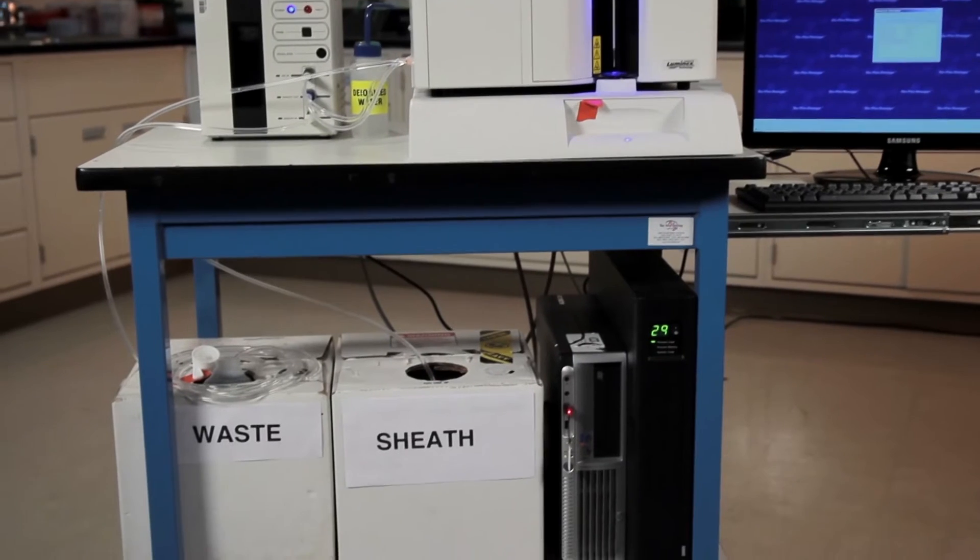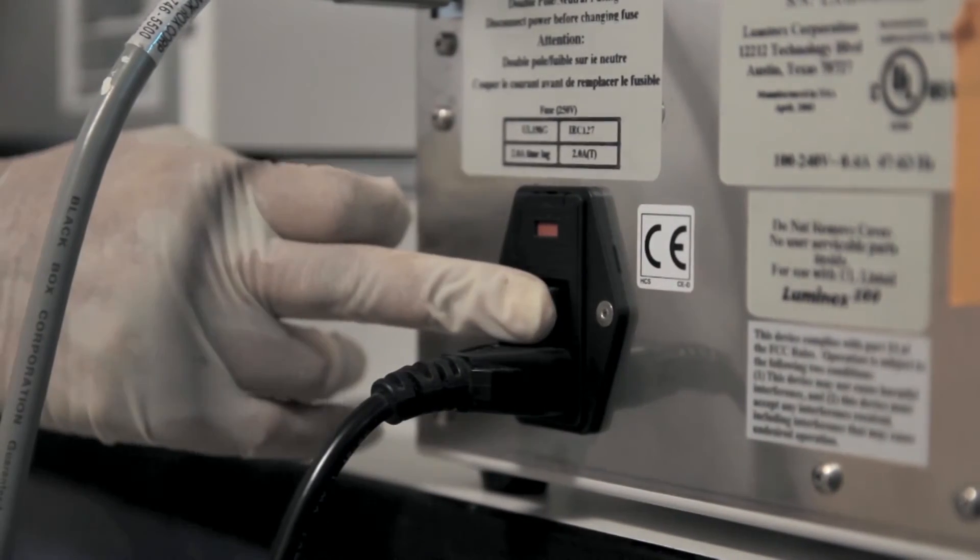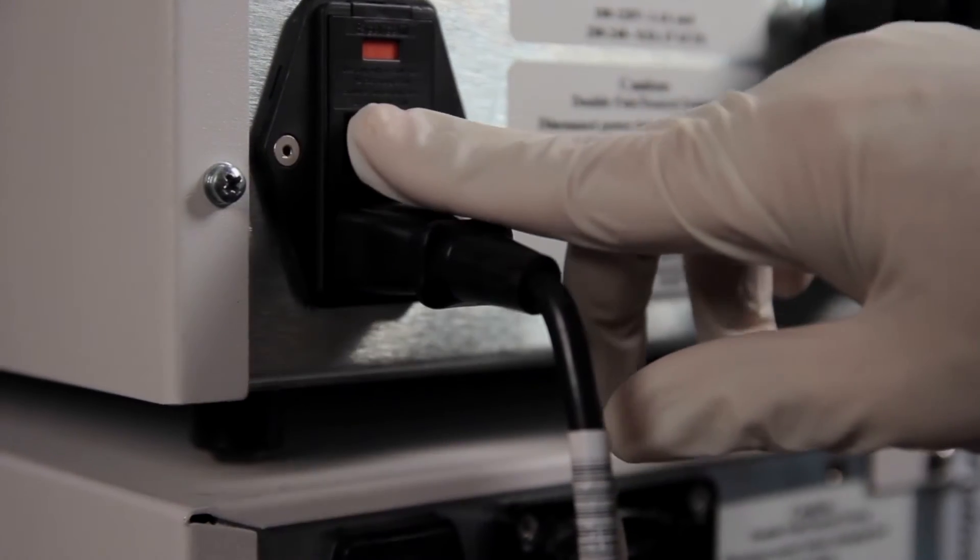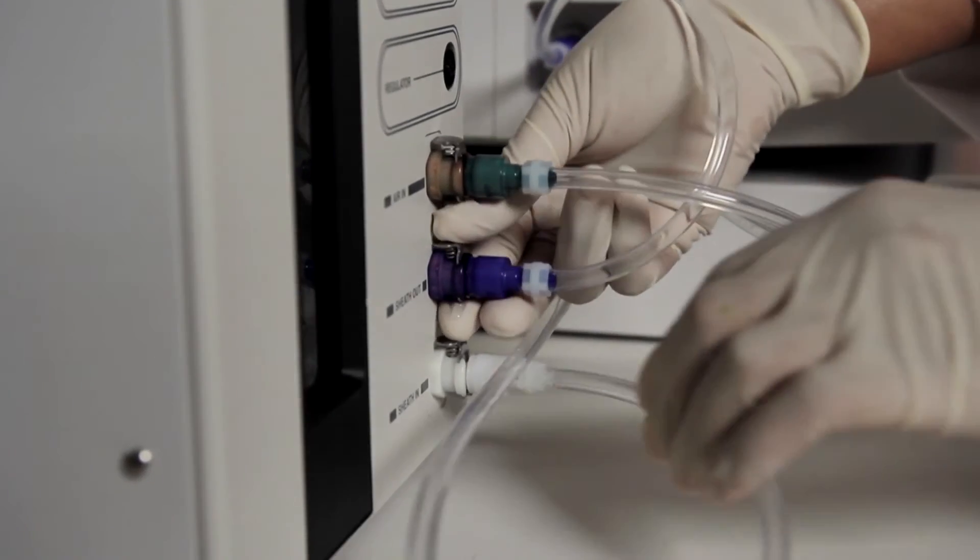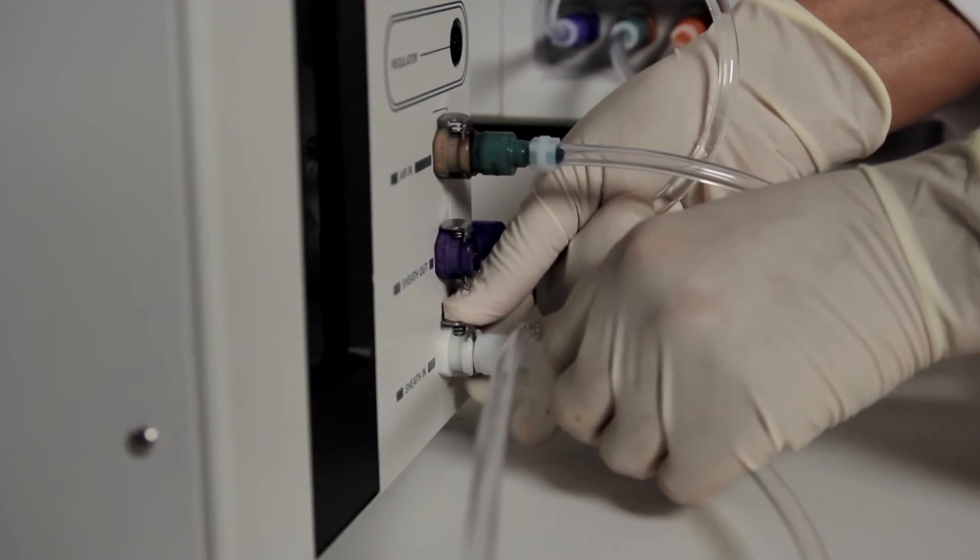It is best to drain the sheath fluid into the waste container to avoid cross-contamination. To drain the HTF, turn off the HTF and the BioPlex array reader. Disconnect both the blue and white sheath fluid lines from the HTF, but leave the green air tube connected.